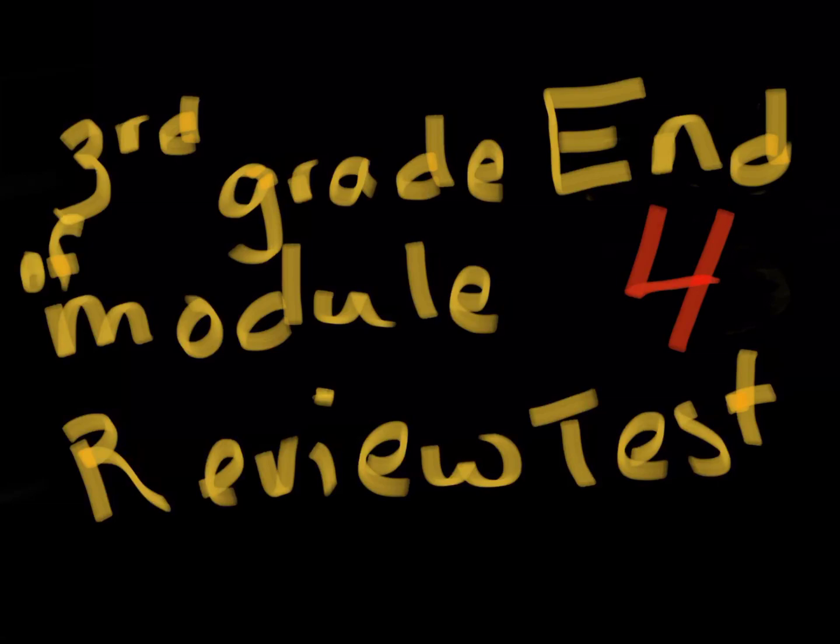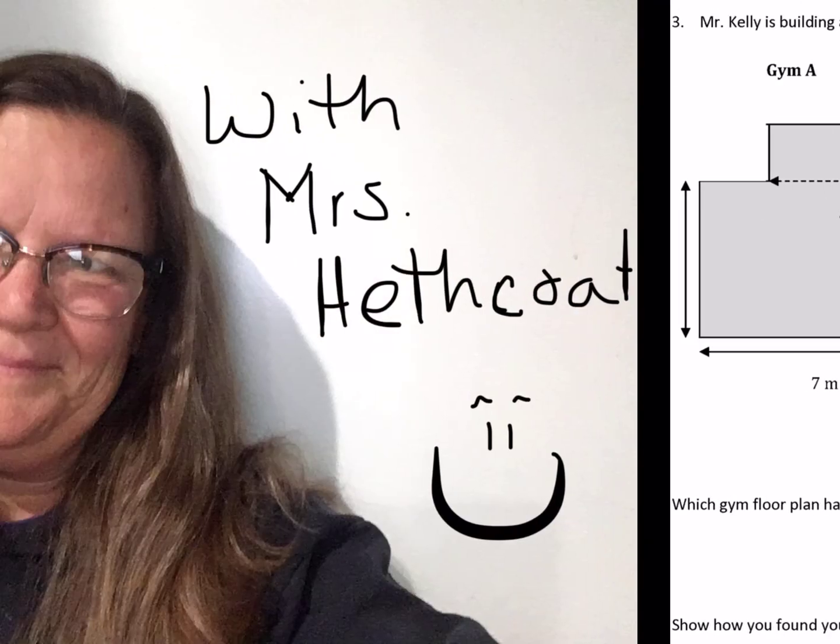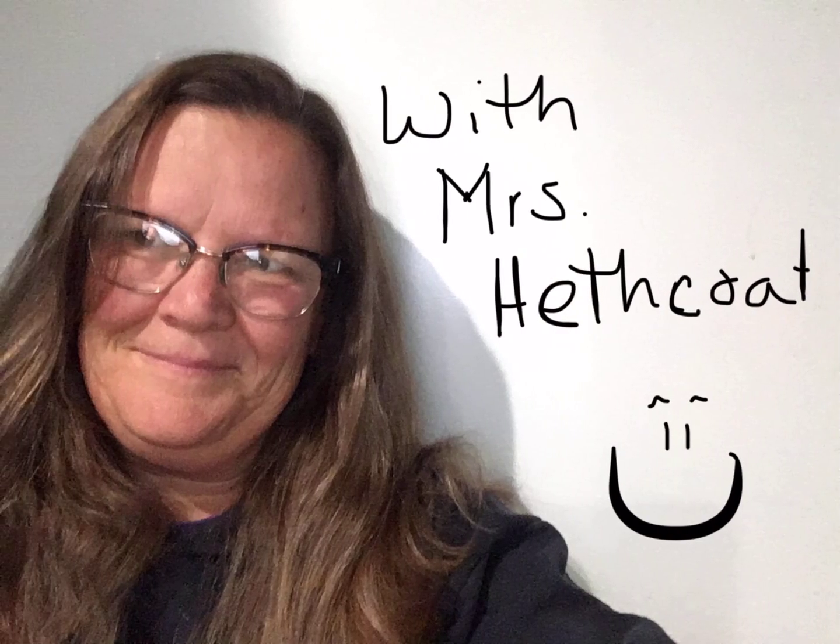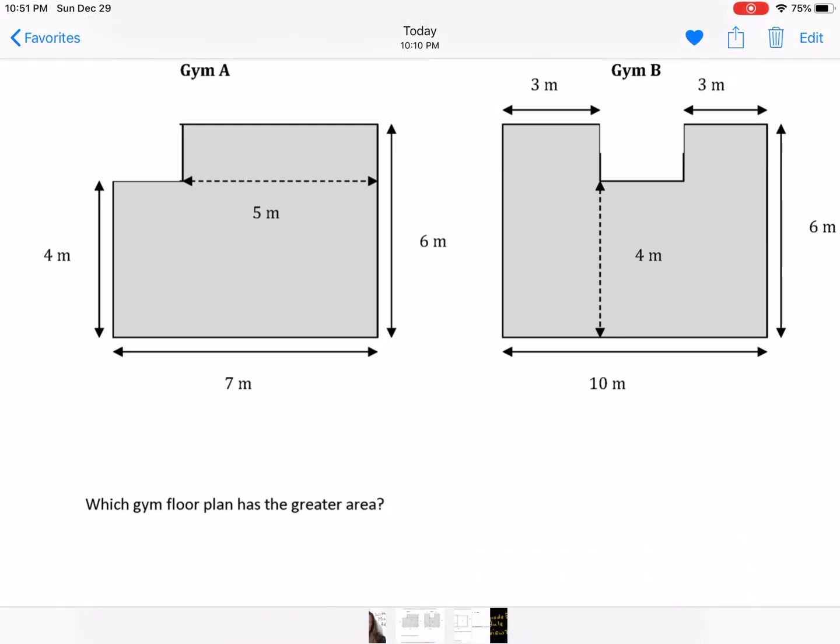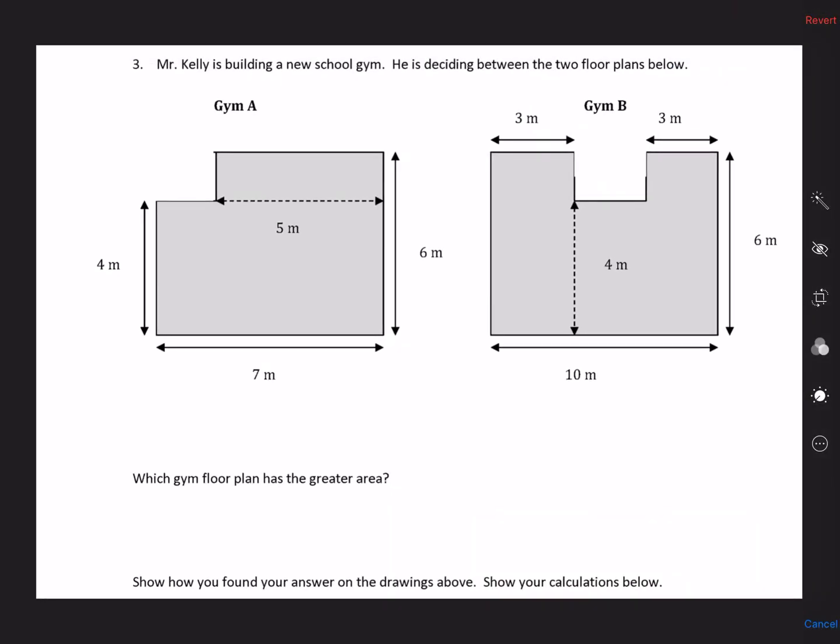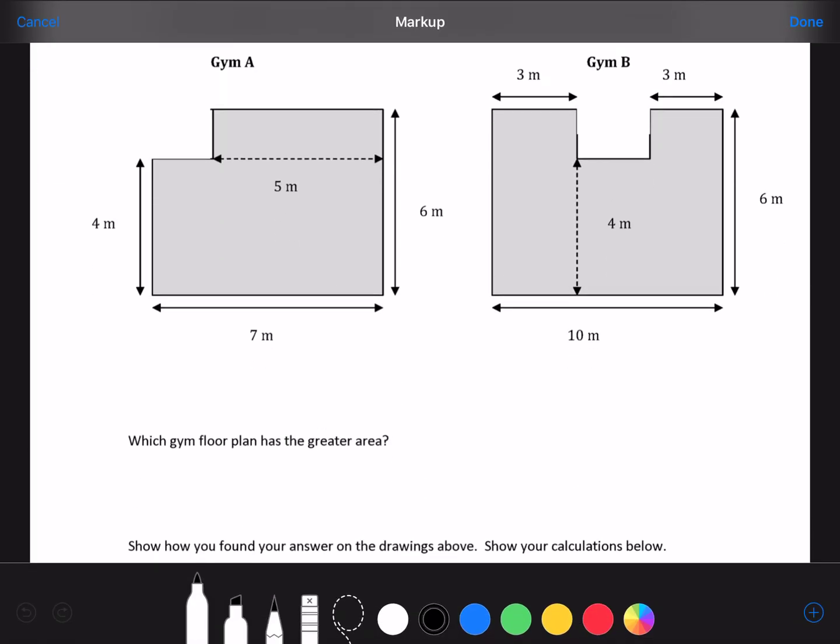Third grade, end of Module 4, Review Tests, Numbers 3 and 4. With Ms. Sethko, that's me. Number 3 says, Mr. Kelly is building a new school gym. He is deciding between the two floor plans below. Which gym floor plan has the greater area? Show how you found your answer on the drawings above. Show your calculations below. So we're going to have to show it on the picture and below as well.